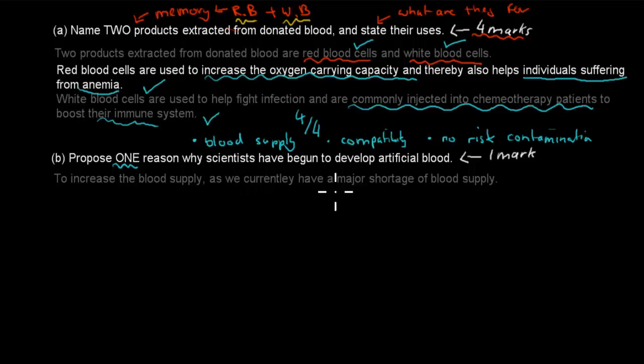So all I've written in this case was to increase the blood supply, as we currently have a major shortage of blood supply. So one reason would be just to increase the blood supply because at the moment we don't have much. And that's worth one mark, and you get one mark for that kind of answer. So four marks for the top and then one mark for the bottom. Five out of five in total.